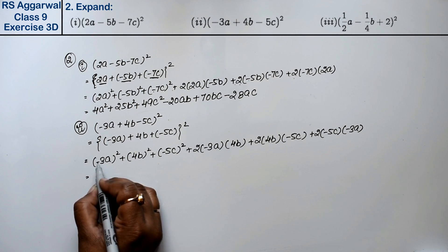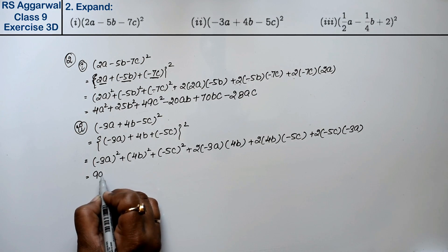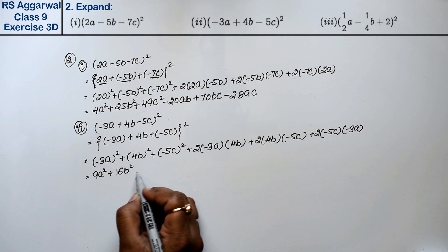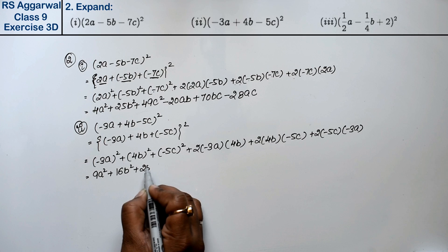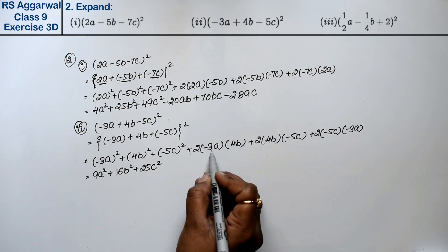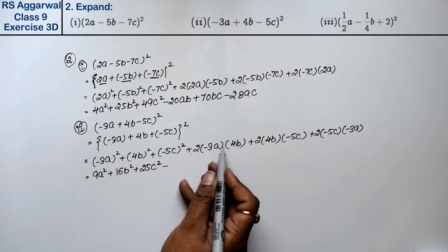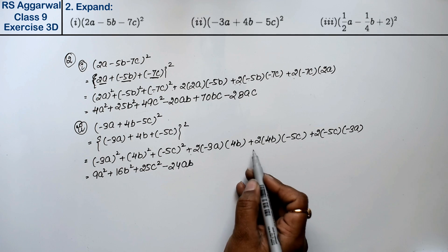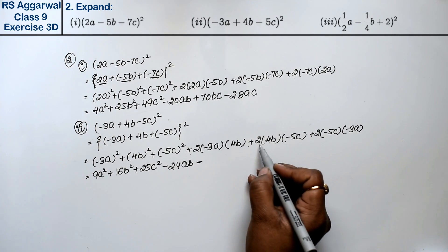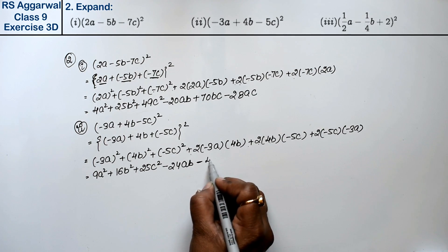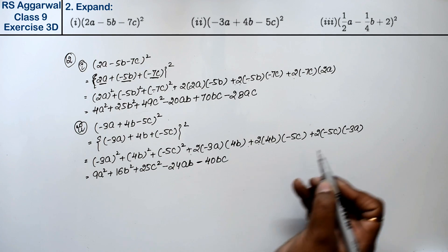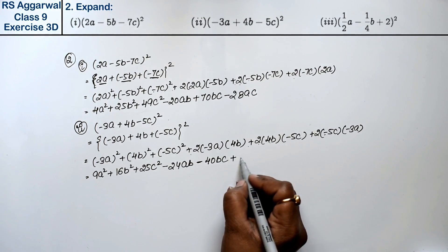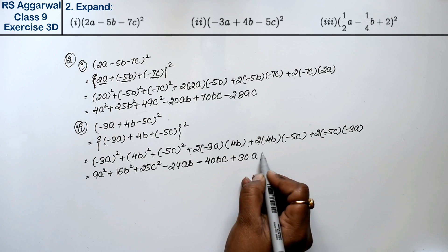Calculating: minus 3 squared is 9A square, 4 squared is 16B square, minus 5 squared is plus 25C square. Then 2 times minus 3A times 4B: minus minus gives plus, so minus 24AB. 2 times 4B times minus 5C gives minus 40BC. And 2 times minus 5C times minus 3A: minus minus plus gives plus 30AC. That is the answer for part 2.